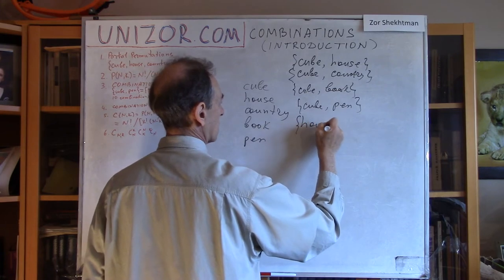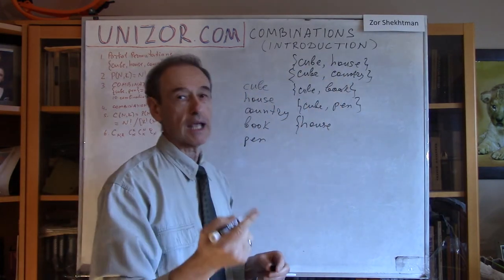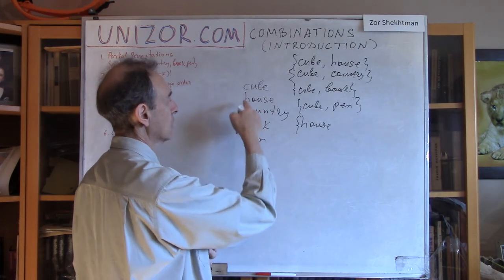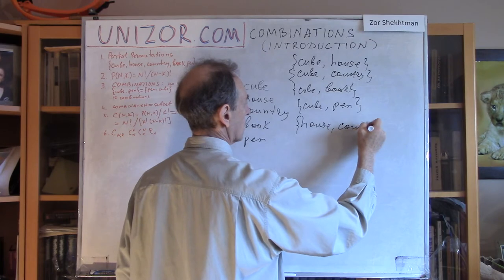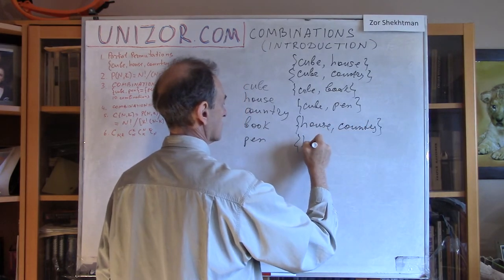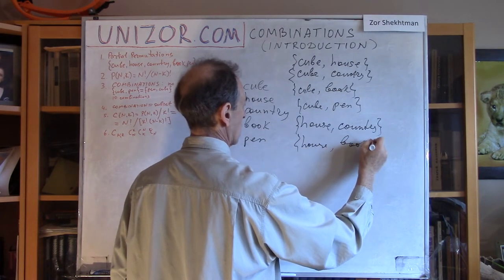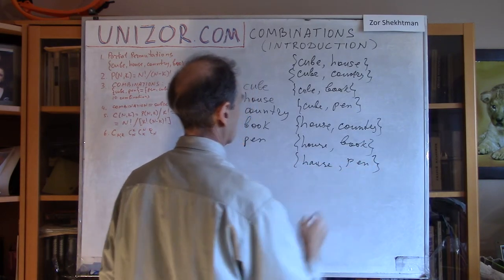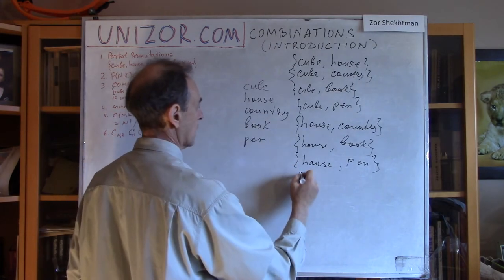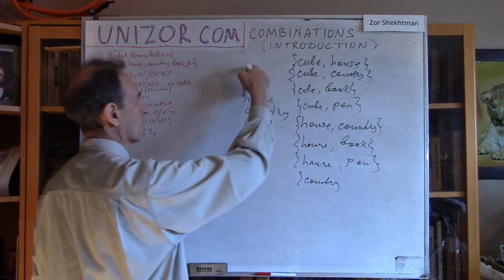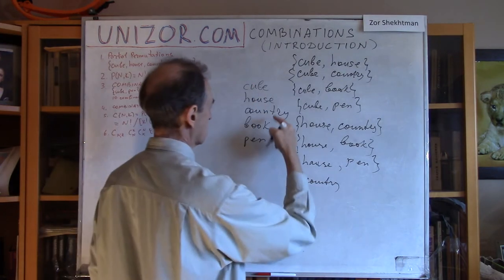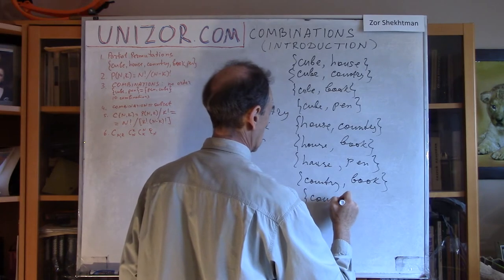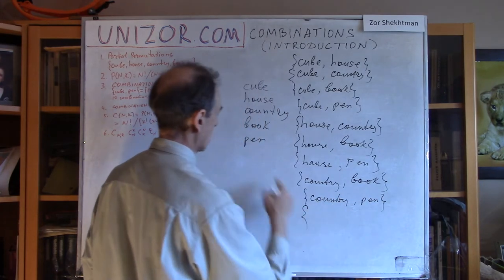With house, we don't count house and cube because we already counted cube and house — we're saying we don't care about order, so that combination is already covered. So we have house and country, house and book, house and pen. Then with country — we already counted country and cube, country and house — so we count country and book, and country and pen. And the only combination left is book and pen.